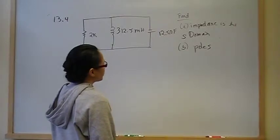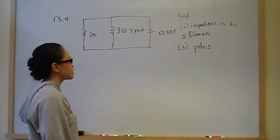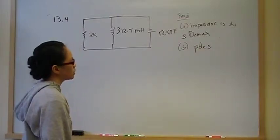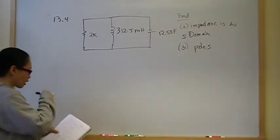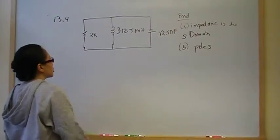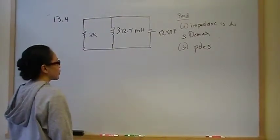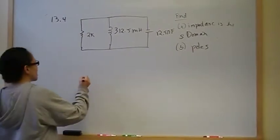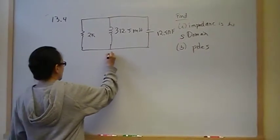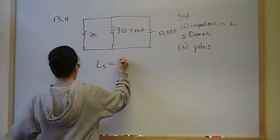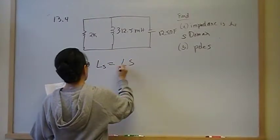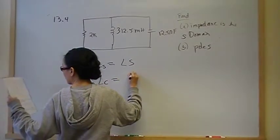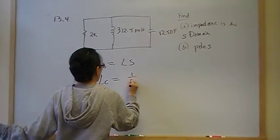For part A we need to find the impedance in the S domain, and in part B we're going to find the zeros, which are also called the poles. We need to know how to transform inductors and capacitors to the S domain, and that is really straightforward. The transformation for an inductor Z_L is LS, and for a capacitor Z_C is 1 over SC.